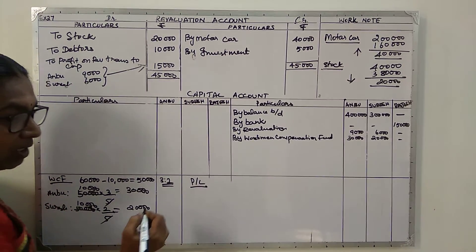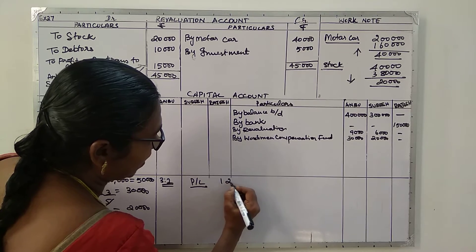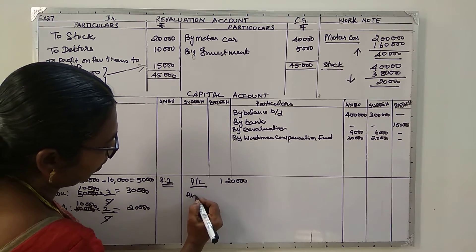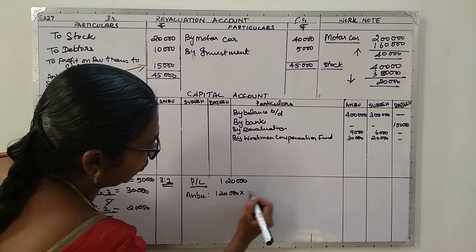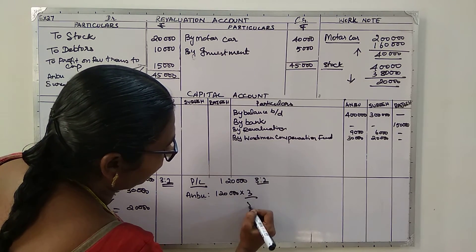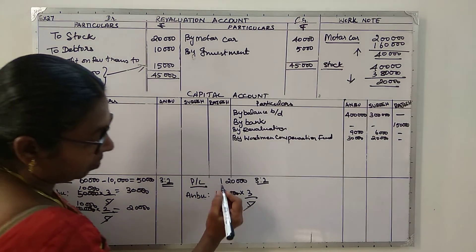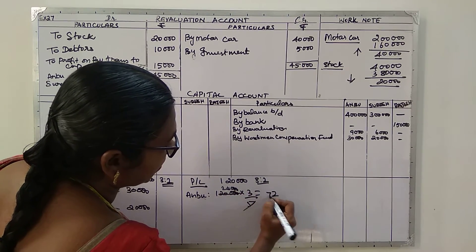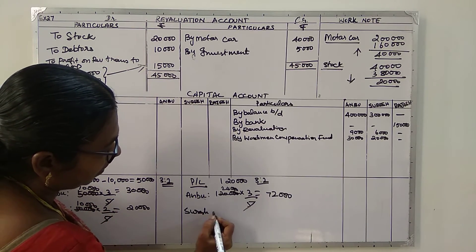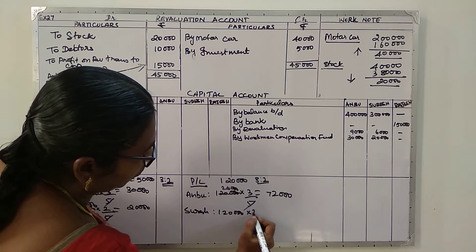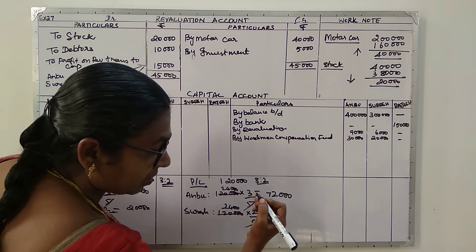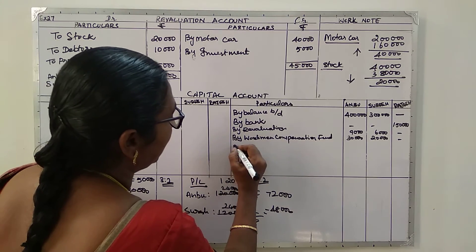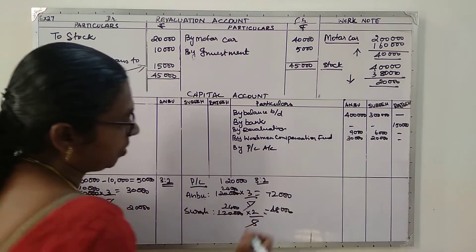Next, the profit and loss account balance of one lakh twenty thousand is to be shared between Anbu and Suresh in the 3:2 ratio. One lakh twenty thousand × 3/5 = seventy two thousand for Anbu. Similarly, one lakh twenty thousand × 2/5 = forty eight thousand for Suresh. So by profit and loss account: seventy two thousand for Anbu and forty eight thousand for Suresh.